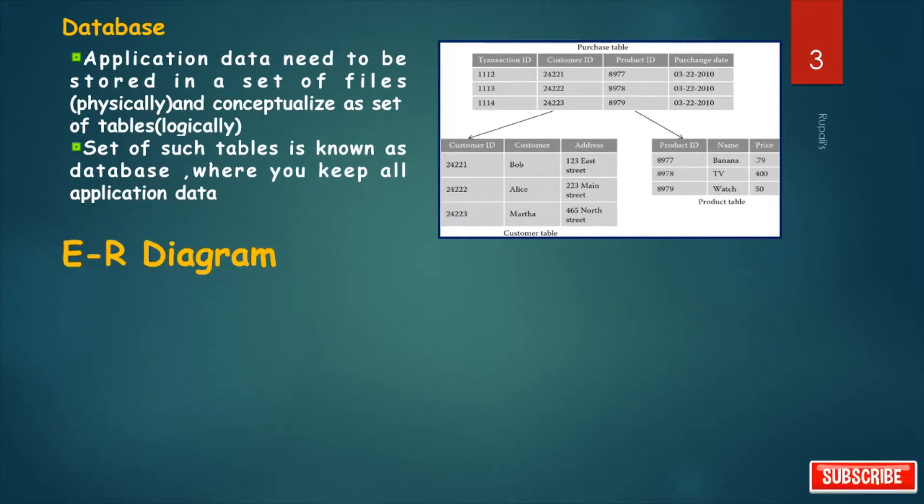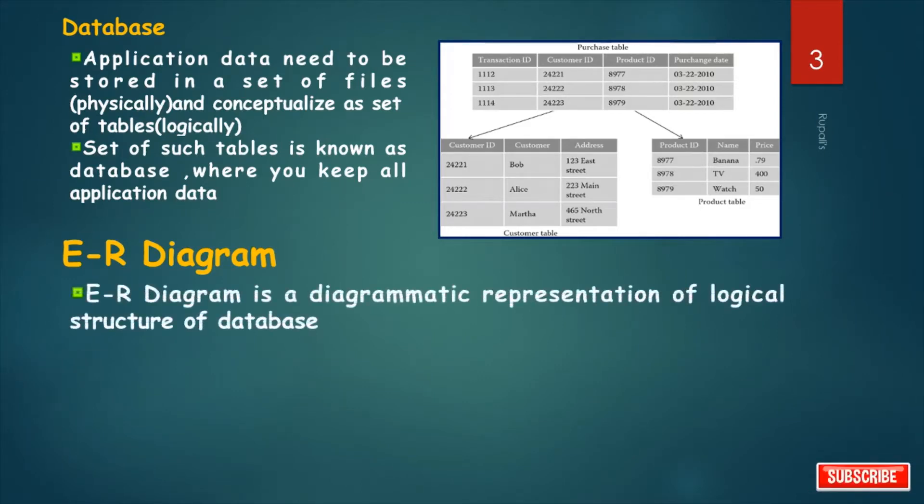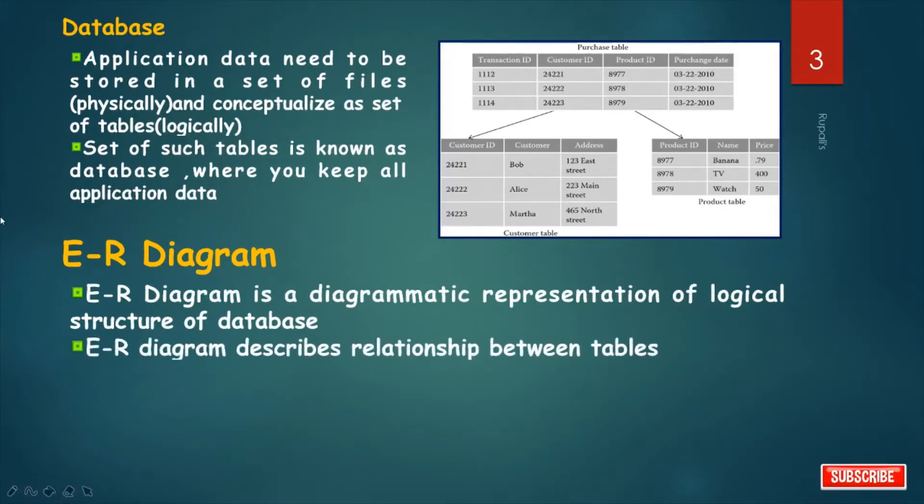An ER diagram shows the relationship among Entity Sets. An Entity Set is a group of similar entities and these entities can have attributes. In terms of DBMS, an entity is a table or attribute of a table in database. By showing relationship among tables and their attributes, ER diagram shows the complete logical structure of a database. So ER diagram is a diagrammatic representation of logical structure of database and describes relationship between tables.